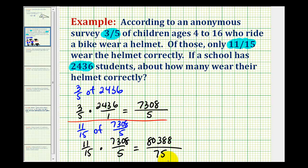So this fraction here represents the number of students that wear their helmets correctly. But of course, we can't leave it in this form. We need to figure out approximately how many students this would be. To do this, a fraction bar represents division. So now we're going to take 80,388 and divide by 75.